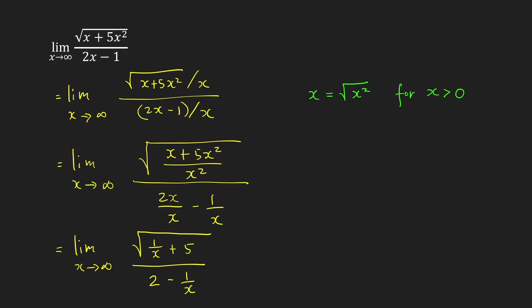Now the limit is already clear. As x goes to infinity, 1 over x goes to 0, and 1 over x again goes to 0. So therefore, the limit of this one is equal to square root of 5 over 2.